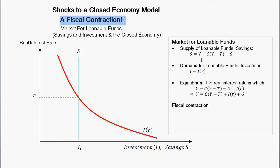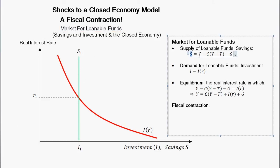So let's deal with a fiscal contraction. As a review of what's going on in this model: this is the market for loanable funds. You have a supply of loanable funds here, and the supply is defined by national savings — S sub 1. National savings equals real income Y (sometimes called output or production) minus all the things people spend money on: consumption, which is a function of disposable income (income less taxes), and government spending. So national savings is the difference between all income and all spending, giving us a straight vertical line for savings since these things are considered fixed in this model.